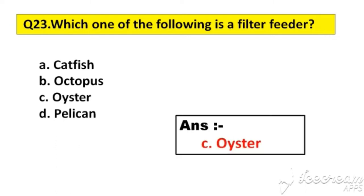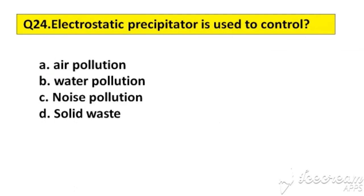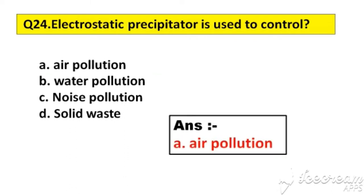Question number 24. Electrostatic precipitator is used to control. Option A: Air pollution. B: Water pollution. C: Noise pollution. D: Solid waste. The right answer is option A, Air pollution.